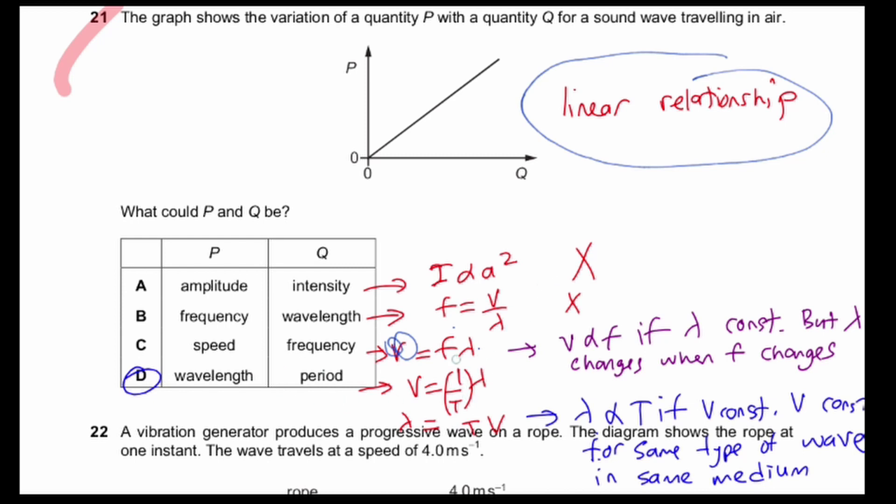Now, since there is period, you can change the frequency here to one over period. So you will notice that if I find the relationship between lambda and T, I will get lambda equals TV.